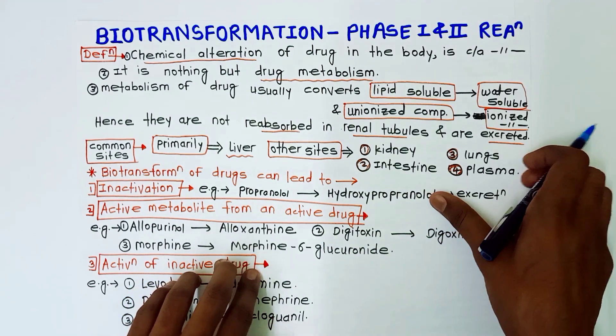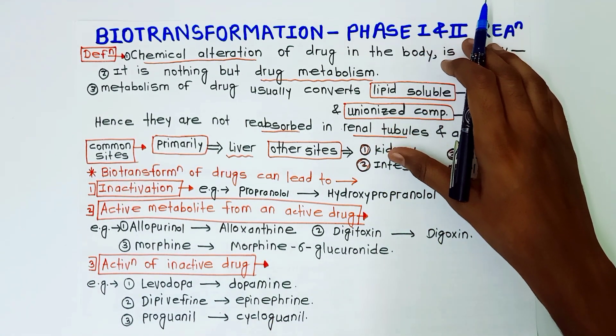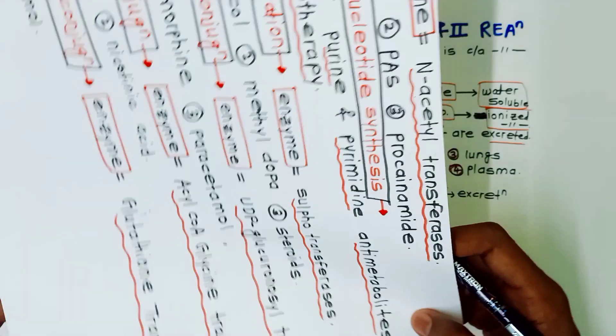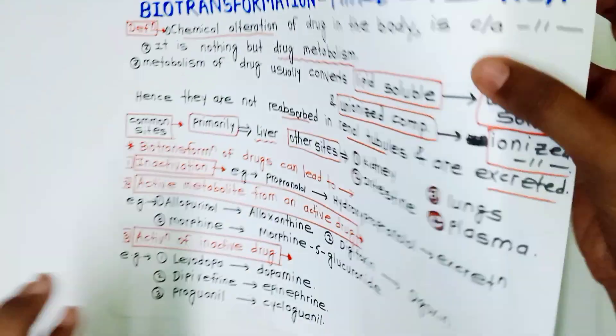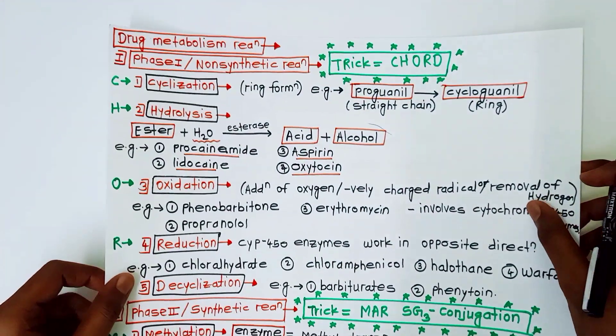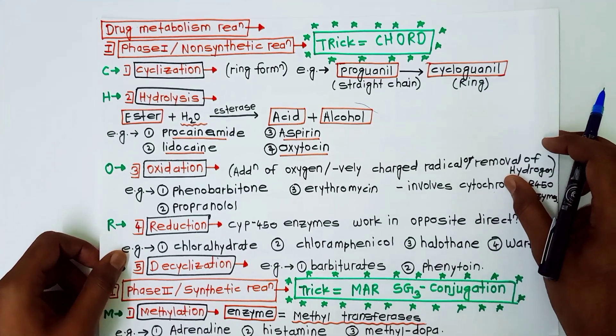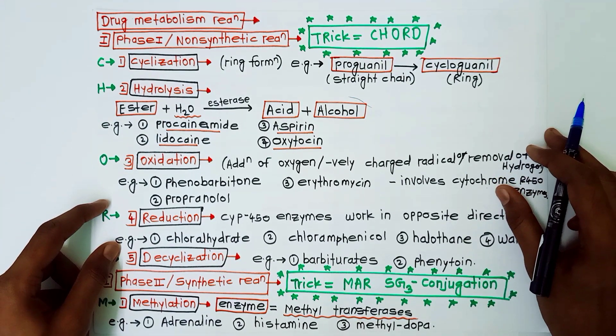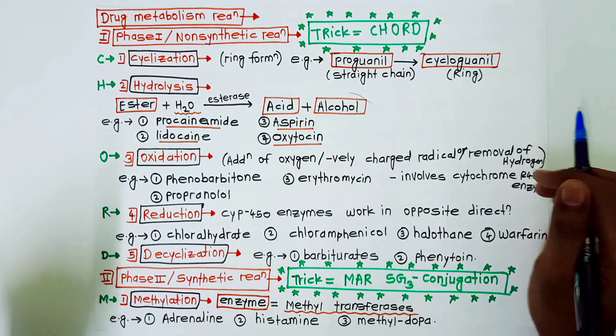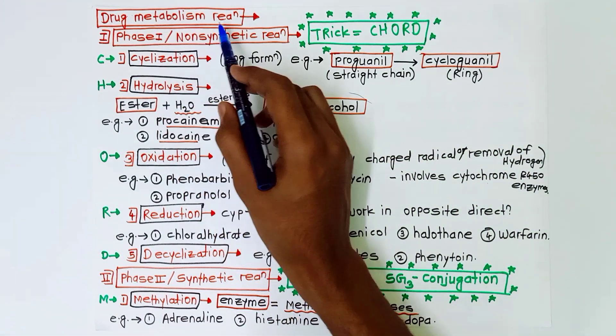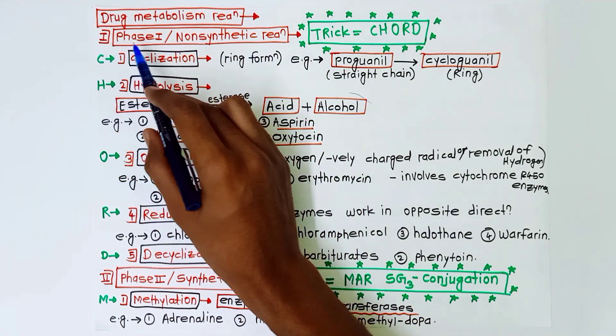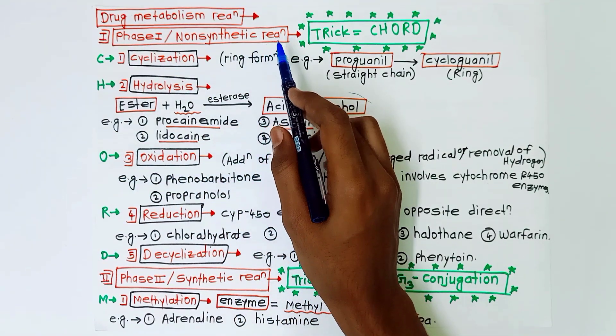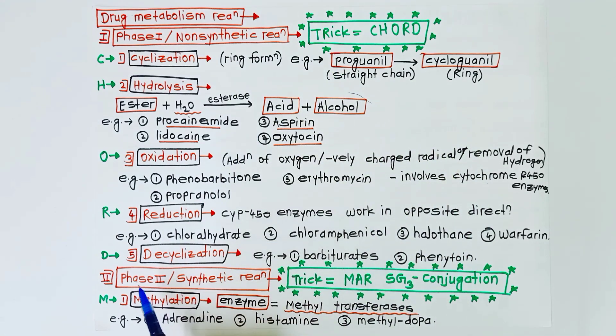Now we will learn the reactions involved in the drug metabolism. So there are two types of reactions basically involved in drug metabolism. First is phase 1 reaction or non-synthetic reactions, and second is phase 2 reactions or synthetic reactions.